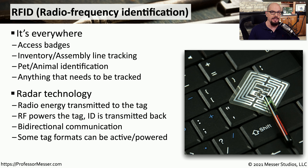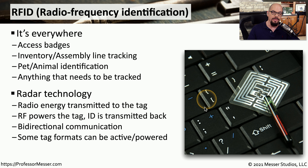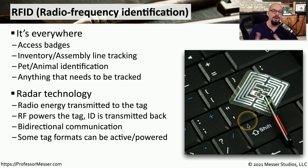RFID works using radar technology. We send a signal to the RFID device, which is powered from that signal — it charges the chip and then information is transmitted back from that powered connection. You're able to get an ID number from that chip that you can associate with where that chip happens to be. Some RFID tag formats don't require powering with the RF signal; instead, they may be locally powered and use other methods to send their ID information out over the wireless network.